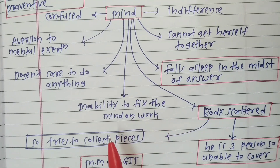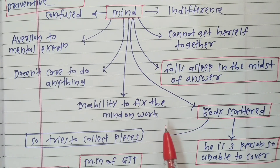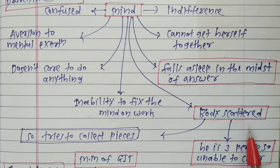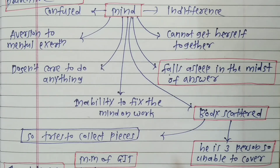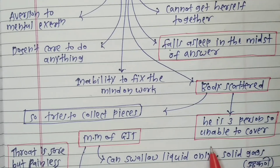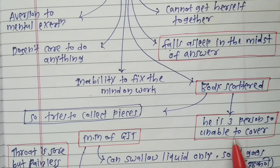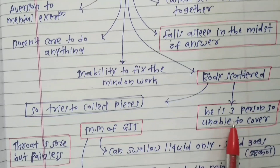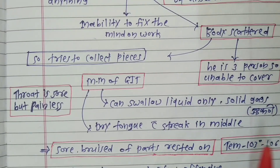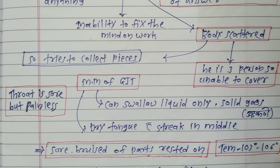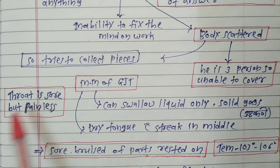Other characteristic mind symptoms include inability to fix the mind on work. The patient thinks the body is scattered and tries to collect the pieces. He also thinks that he is three persons and is unable to cover all of them. This covers the mind section of Baptisia. Another characteristic is the throat of Baptisia — it is sore but painless, which is an MCQ question.